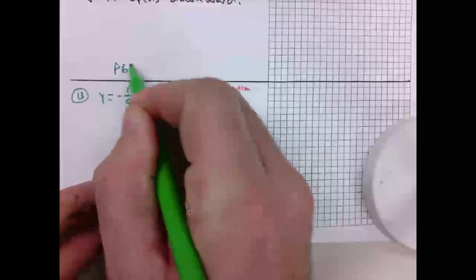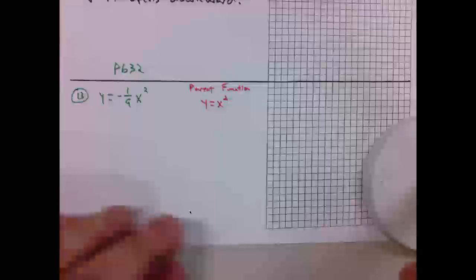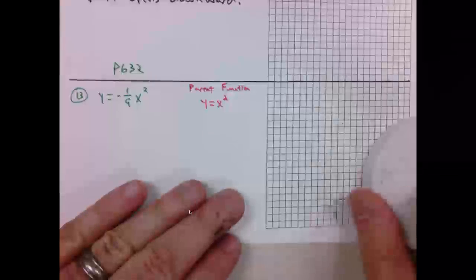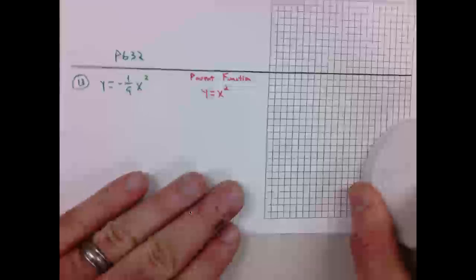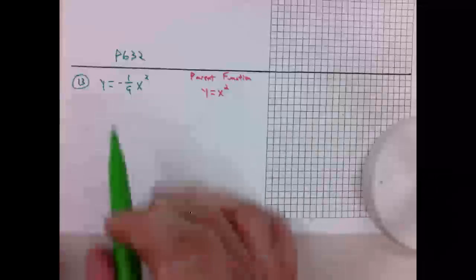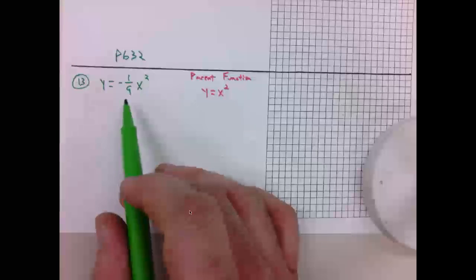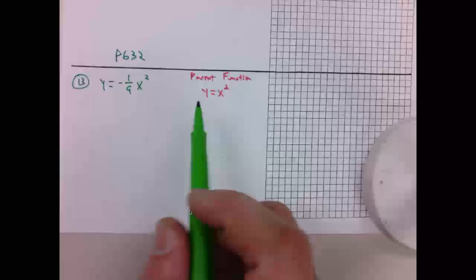We're looking at page 632, problem number 13. The problem calls for us to graph the function y equals negative 1/9 x squared and compare it to the parent function y equals x squared.